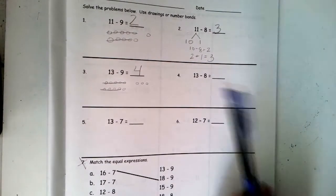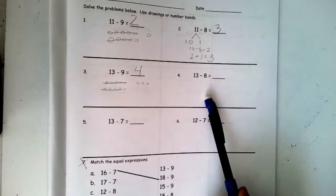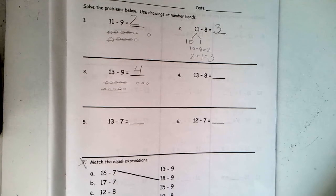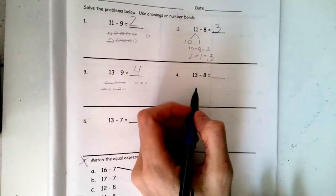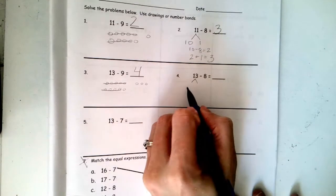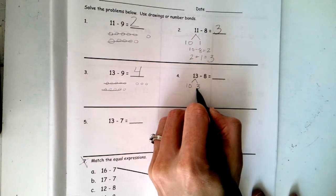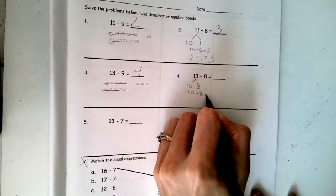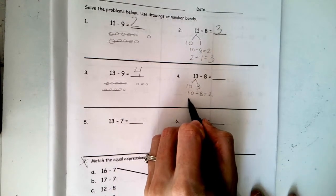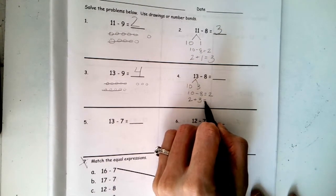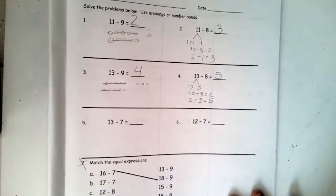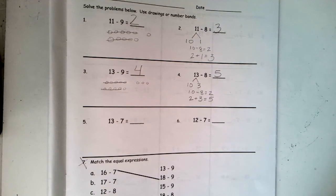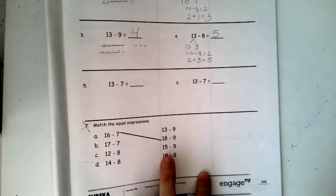Okay, number 4. Pause the video, do it on your own, then push play so we can review the answer. Let's review. If I use the number bond strategy for 13 take away 8, I'd break up 13 into 10 and 3. I have my easy, friendly 10 now. Now I can take away 8, and I know that equals 2. Now I have 2 plus 3, which is left, and my answer is 5. 13 take away 8 equals 5. I hope you did that on your own before you found my answer.